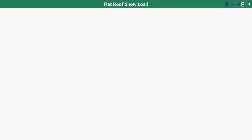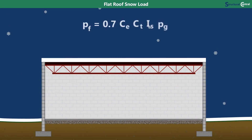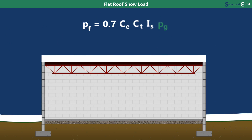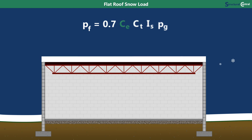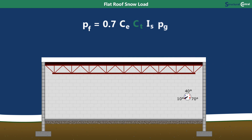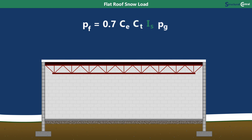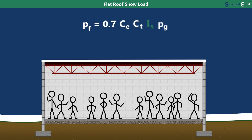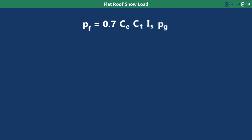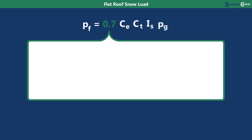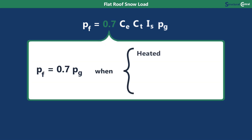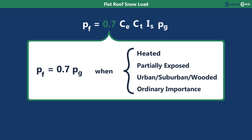The first thing you need to determine is the flat roof snow load, using the formula shown. The formula works by taking the 50-year ground snow load and adjusting it for roofs by multiplying it by factors that account for how much snow is blown off the roof, how much snow melts due to heat from inside the building, and how devastating a collapse would be. The first factor is 0.7, which is basically your starting point — it says the snow load on the roof will be 70% of the ground snow load for a heated, partially exposed building in an urban, suburban, or wooded area of ordinary importance. From here, the other factors make adjustments for any deviation from that condition.